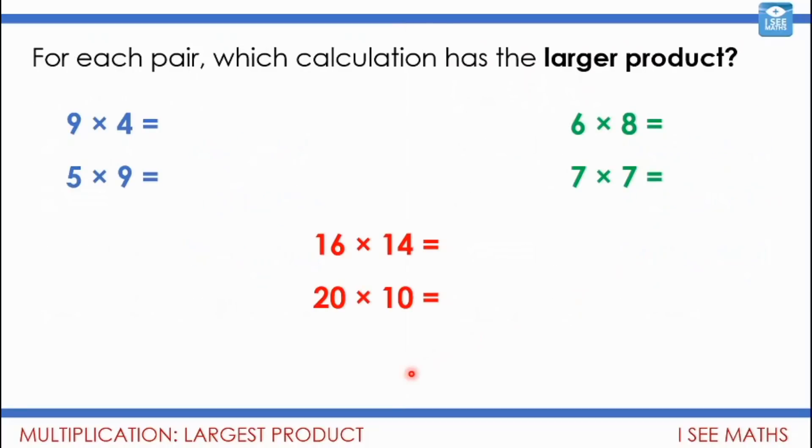Have a look at these examples here. It says for each pair, which calculation has the larger product? Now what I want you to do is see if you can work that out even if you don't know what the answers are. I don't want you to work out the answer. I just want you to have a look at the numbers and think which one do you think will have the larger product, and why. And can you do that without working out the answers to the questions? It's an odd thing to be asked, isn't it? Pause the video and have a think, and how can you tell?